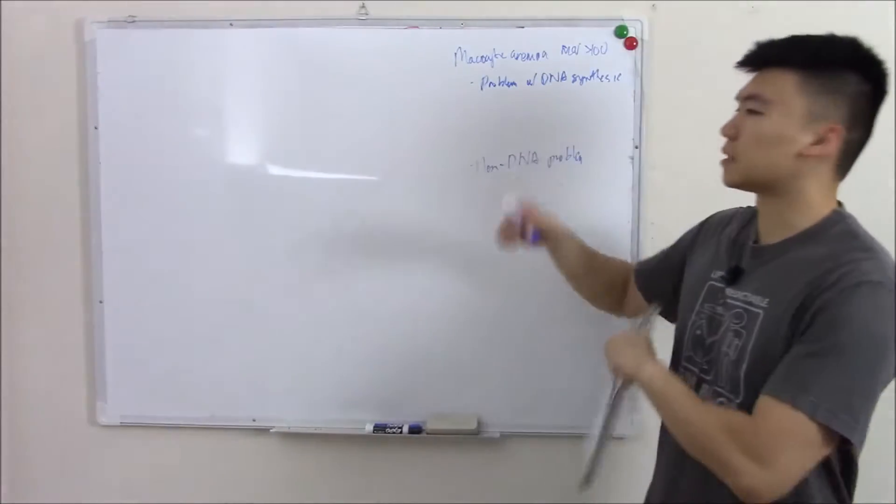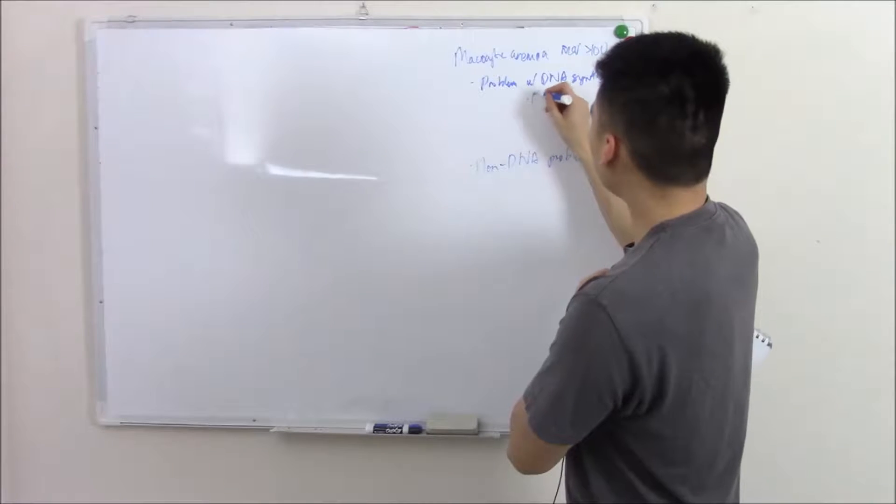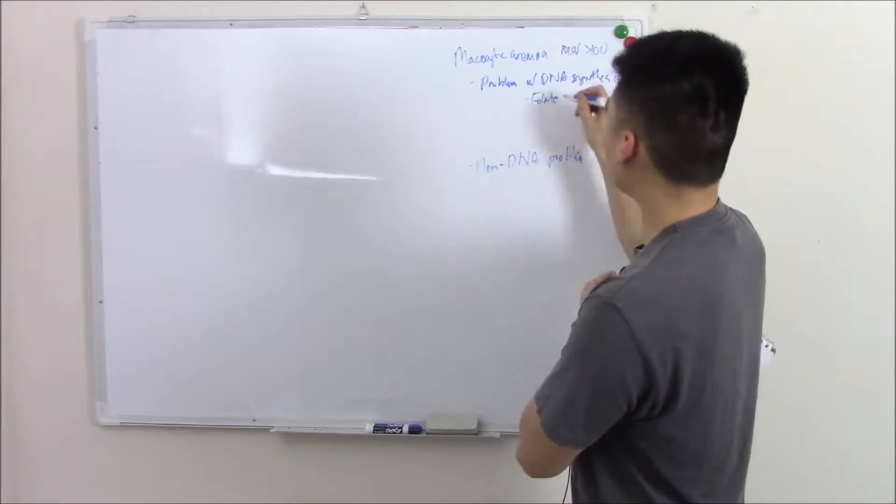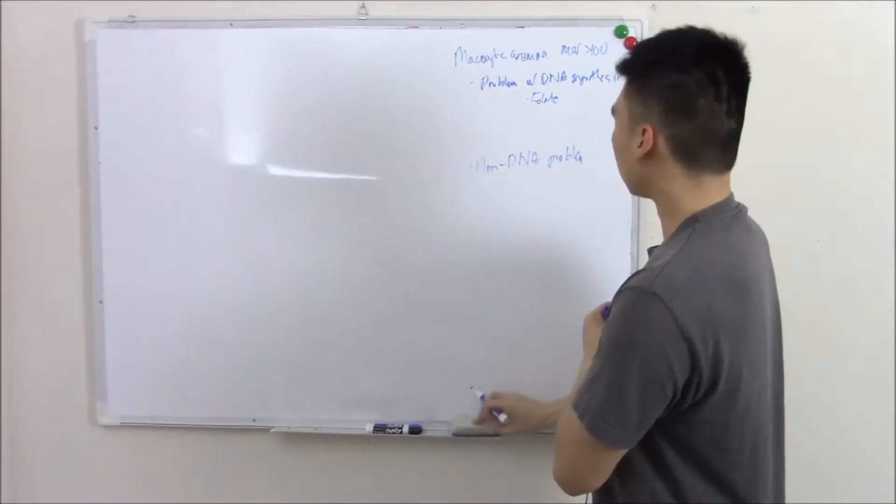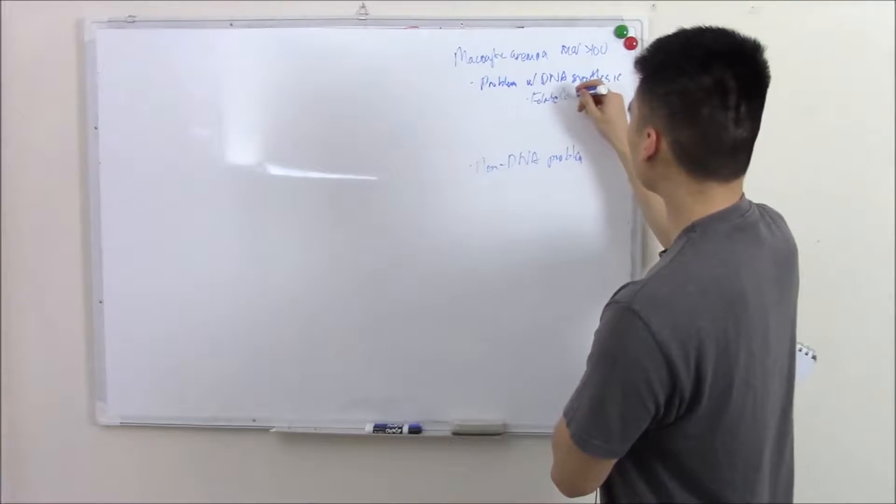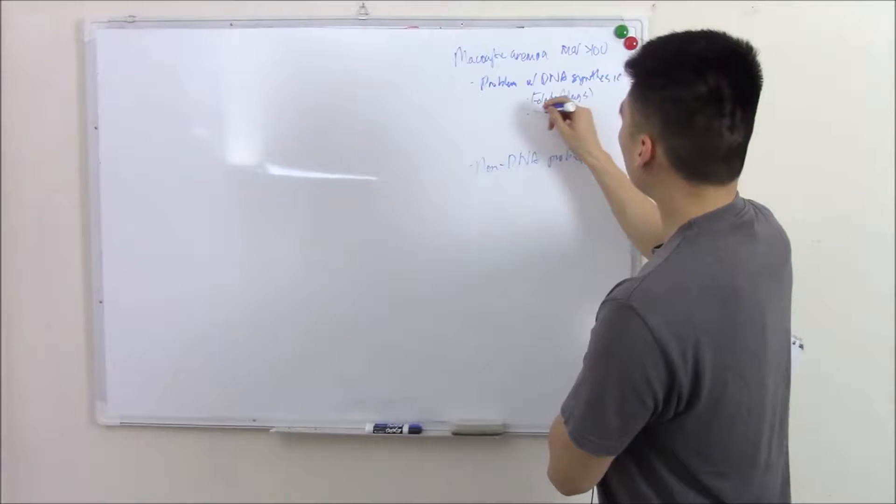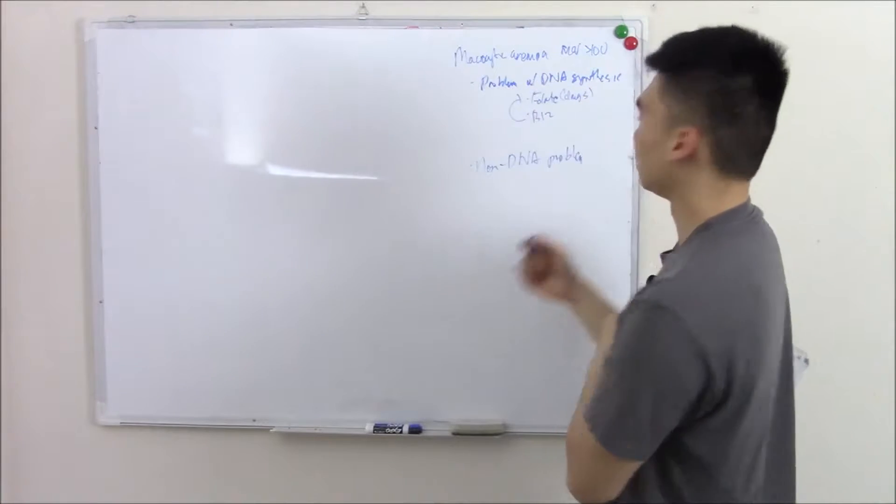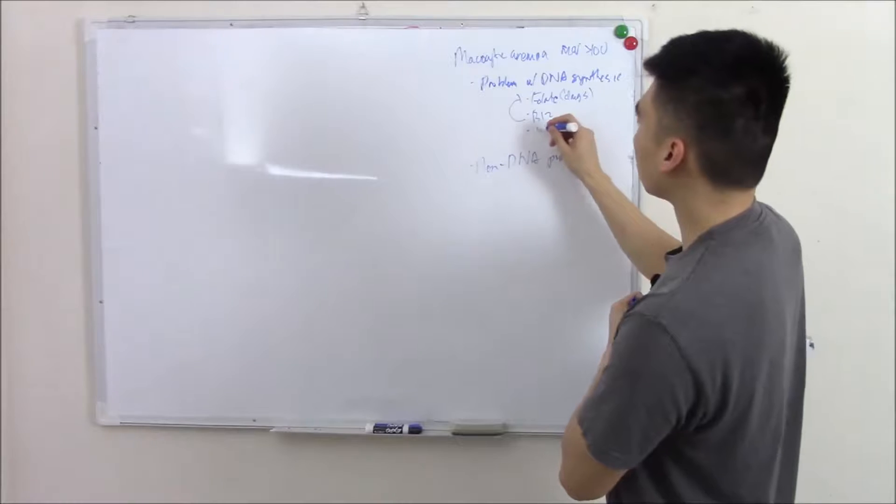Problems with DNA synthesis: you can have folate deficiency that's needed to make pyrimidines, or drugs that cause folate deficiencies like methotrexate, B12 which is needed to replenish folate, and then you have something called